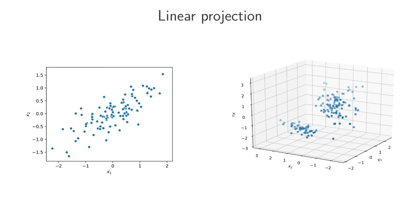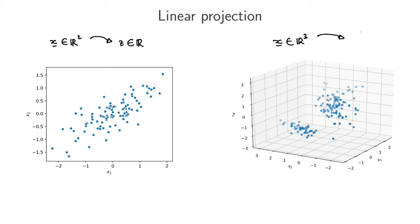In principal component analysis we perform dimensionality reduction by performing a linear projection of the data. Here we've got two figures: on one side we've got a two-dimensional data set, and on the other side a three-dimensional data set. In the 2D case we might want to reduce dimensionality and get new representations in just one dimension, or in the 3D case reduce three-dimensional feature vectors to maybe just two dimensions, or even one dimension.